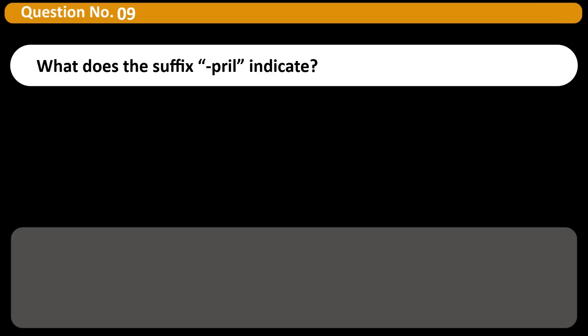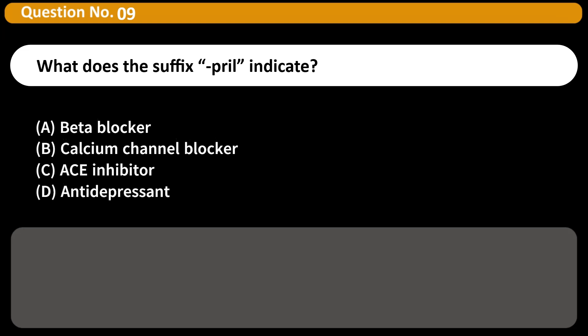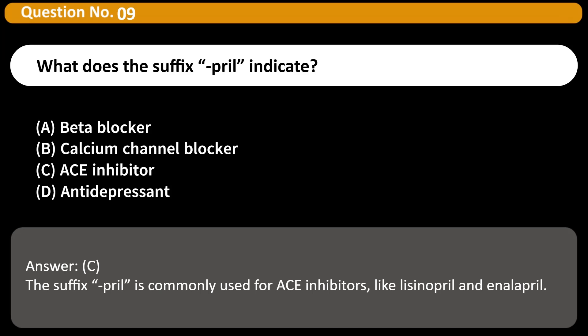What does the suffix '-pril' indicate? A. Beta blocker. B. Calcium channel blocker. C. ACE inhibitor. D. Antidepressant. Answer: C. The suffix '-pril' is commonly used for ACE inhibitors, like lisinopril and enalapril.